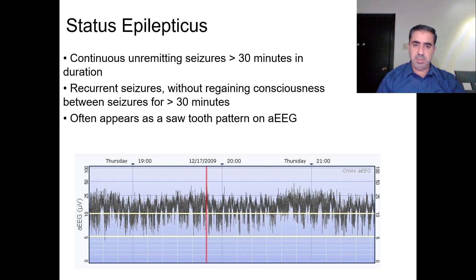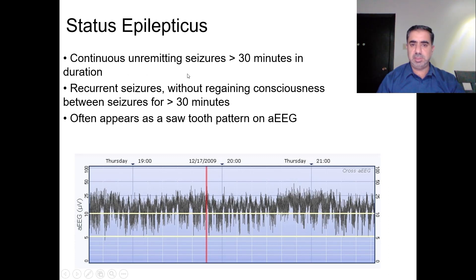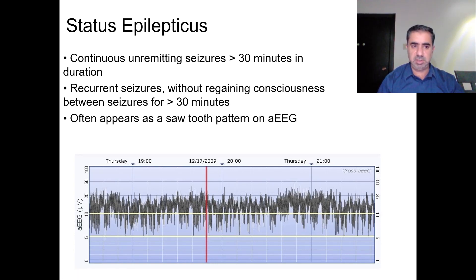Status epilepticus appears the same way but with many attacks of sudden rise in the lower margin, giving the tracing a saw-tooth appearance. This represents continuous unremitting seizures for more than 30 minutes, or recurrent seizures without regaining consciousness between seizures for more than 30 minutes — as status epilepticus is usually defined.